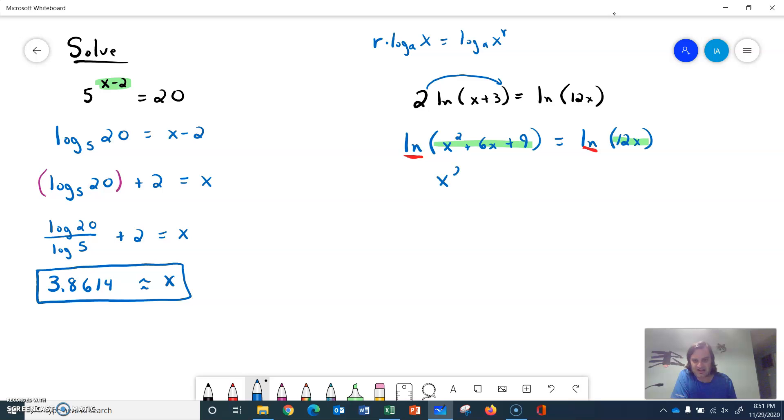So we're not dividing out that natural log, we're just realizing that we're doing the same thing to both sides, so we should be able to have the same arguments.